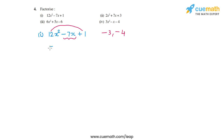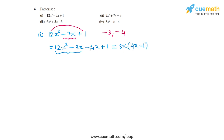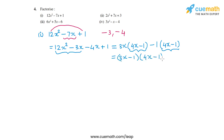So this becomes 12x² minus 3x minus 4x plus 1. From the first pair of terms I can take out a factor of 3x common, leaving 4x minus 1. From the second pair there is no common factor, so I write it as minus 1 times 4x minus 1. Now I have 4x minus 1 as common, so I take it out and I am left with 3x minus 1 times 4x minus 1. This is the factored form of the first polynomial.